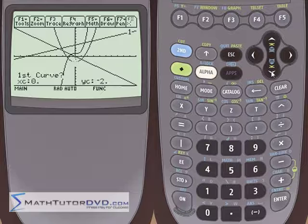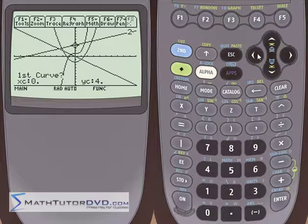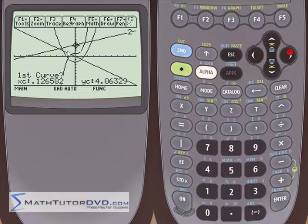So notice right now we're on the parabola because that's y1. Hit the down arrow. Now it's snapped up to the line because that's y2. Now this is one of the graphs we're interested in. We're stuck on one of these lines. So hit enter for that being the first curve.